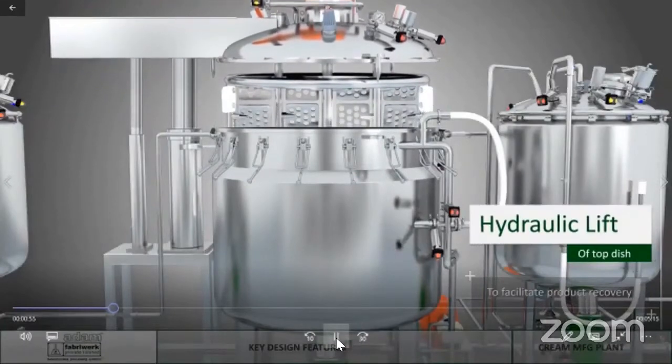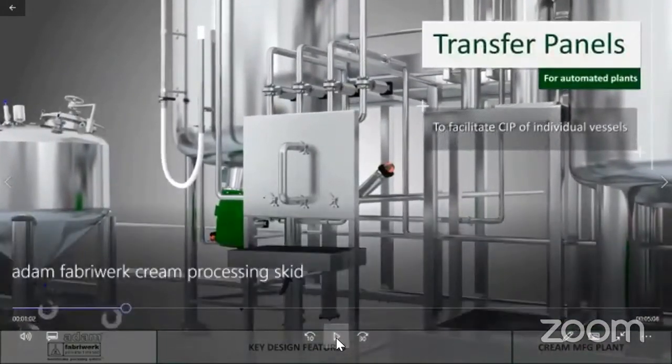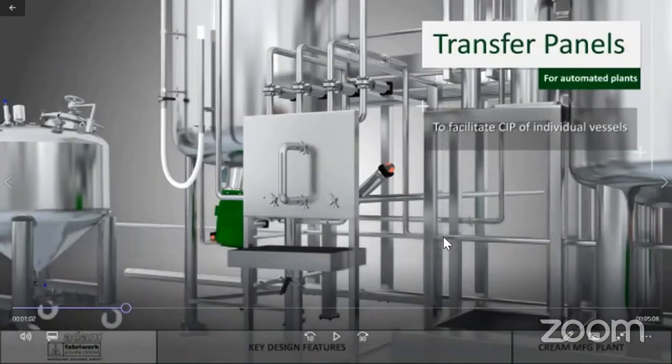There is hydraulic lifting for the top dish of the vessel to take the top lid up. There are transfer panels also to facilitate CIP of individual vessels. A transfer panel is a system in which lines are connected from the CIP and redistributed to different points within the vessel. The spray ball of each vessel - manufacturing, wax, water, as well as storage - is connected through the transfer panel. It is a fail-safe mechanism for cleaning in place of the process vessels, ensuring you can carry out batch operation within the vessel and CIP of the other vessel at the same point in time.